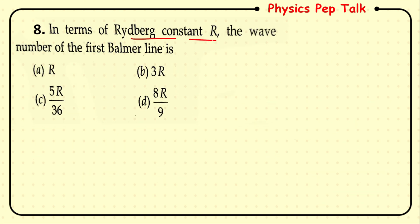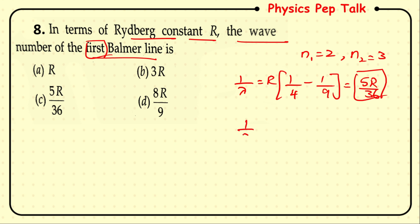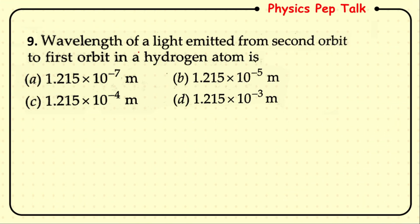In terms of Rydberg constant R, the wave number of the first Balmer line: for the Balmer series n₁ = 2 and for the first Balmer line n₂ = 3. So 1/λ = R(1/4 − 1/9) = 5R/36. The wave number, which is 1/λ itself, equals 5R/36. So option C is the correct answer.